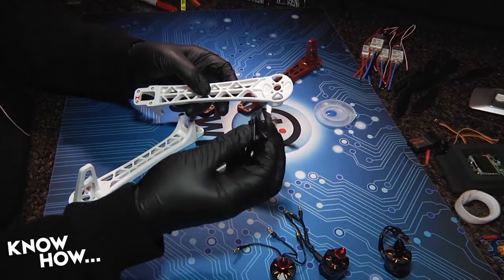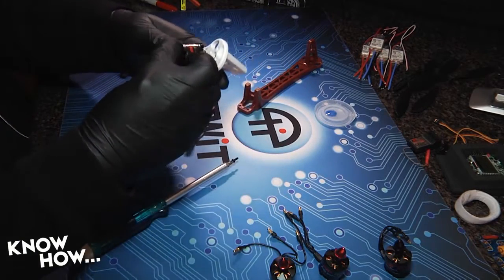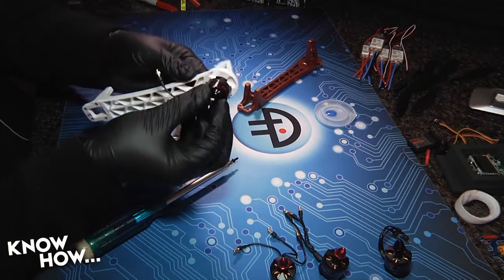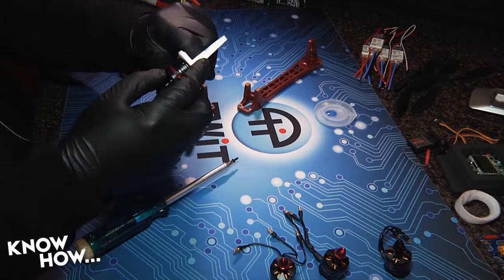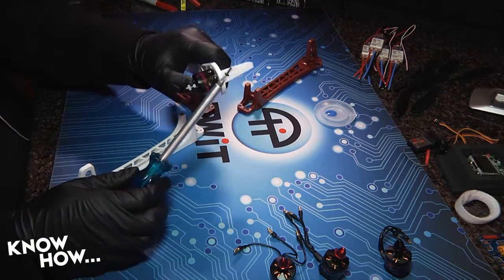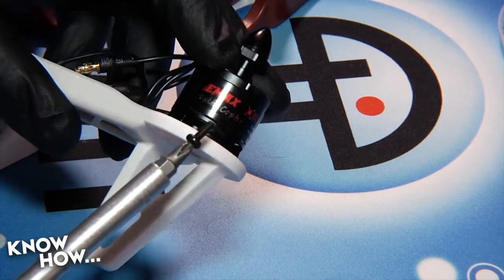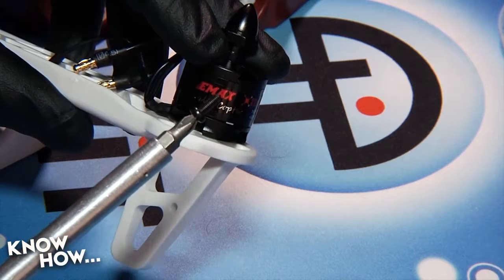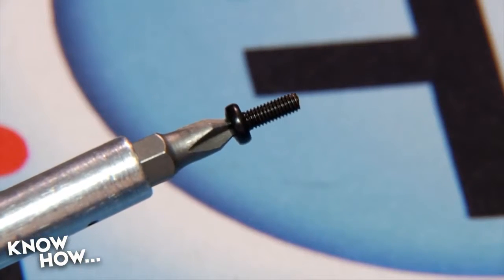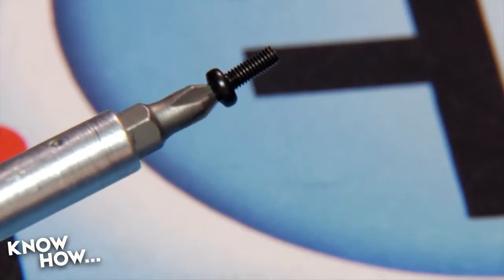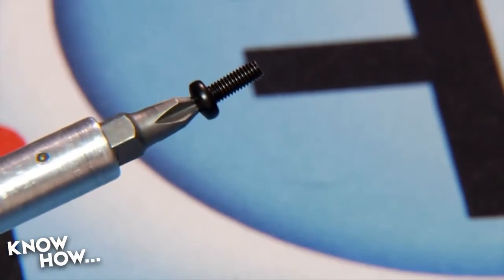Take arm number one and one of the motors that turns clockwise, in our build it's one of the black capped motors, then mount the motor to the arm using four M3 8mm machine screws. The length is important because 6mm screws won't penetrate far enough into the motor housing to truly lock it to the arm, and 10mm screws will penetrate too far, possibly touching the windings and damaging or destroying the motor.